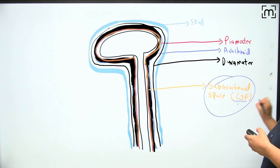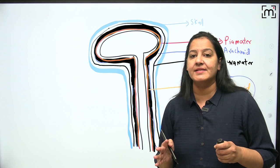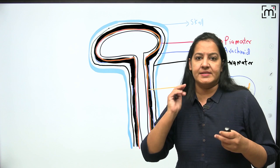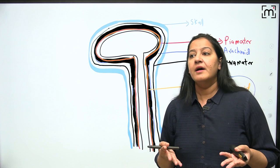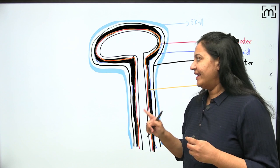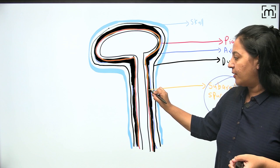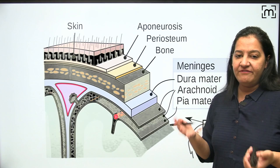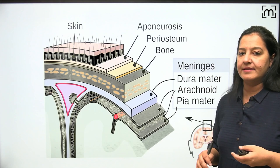If a patient presents with fever and neck stiffness, you suspect meningitis. For confirmation and to identify the type, there is no blood test — the only diagnostic test is CSF tapping by lumbar puncture from the subarachnoid space. Based on CSF findings, we decide the type of meningitis.